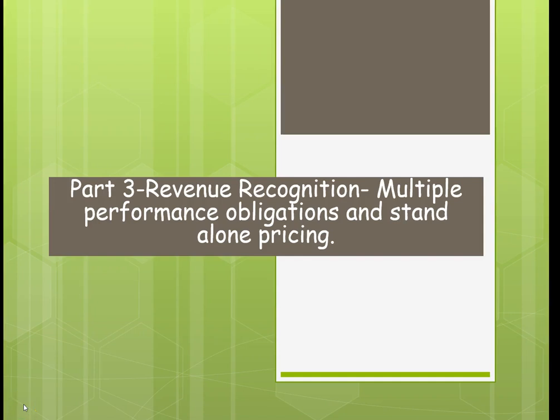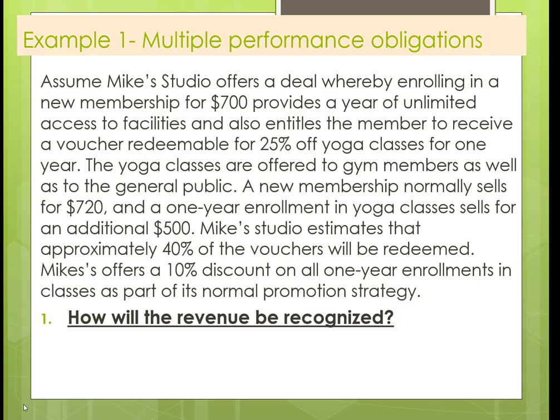This is part three for revenue recognition, and we're going to cover multiple performance obligations and stand-alone pricing. Let's take a look at a couple of examples and see how it's done. In this example, we have a studio that will allow you to buy a membership for $700 that includes a voucher for a 25% off yoga classes for one year.